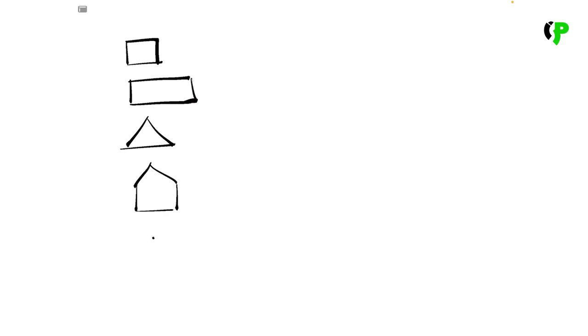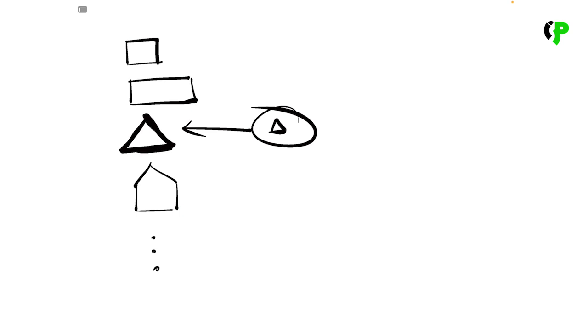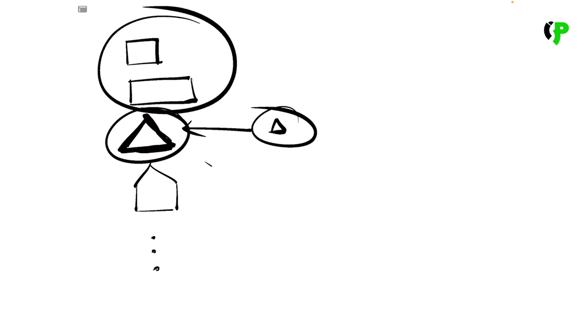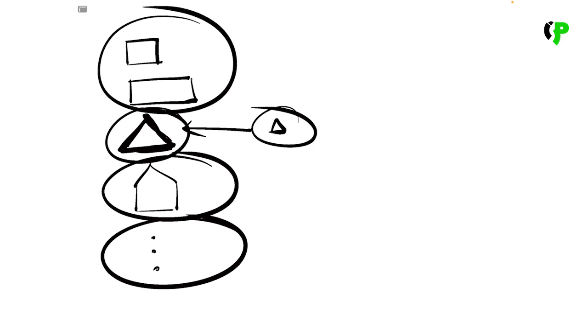If we learn about polygons, we will learn about a square, a triangle, and a pentagon. We also have a hexagon. Polygons are basically one closed figure.